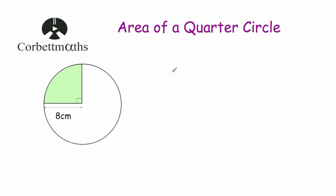Just remember the area of a circle: area is equal to pi r squared. So if we do the radius squared and multiply it by pi, we'll get the area of the whole circle, and then we can divide that by four to get the area of the quarter circle.